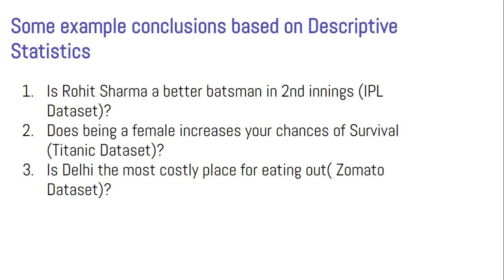Some example conclusions based on descriptive statistics: Is Rohit Sharma a better batsman in the second innings? You have the data, you apply analysis, you pull out a pie chart showing how many runs Rohit Sharma scored in the first innings vs second innings, and you can prove it. Similarly: does being female increase your chance of survival? Since the data is in front of you, plot a graph and get your answer. Is Delhi the most costly place for eating out from the Zomato dataset? All this data is in front of you — just extract, plot, and fetch your answer. This is descriptive statistics, not machine learning.